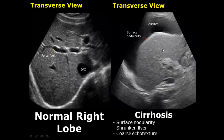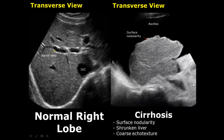Cirrhosis of the liver is a serious condition in which the liver will be reduced in size and will have surface nodularity, which is the rough surface of the liver. It will have coarse echo texture and may also have ascites — fluid surrounding the liver in the abdominal cavity. Here is another image of a cirrhotic liver showing surface nodularity, a shrunken liver with coarse echo texture, surrounded by ascitic fluid.